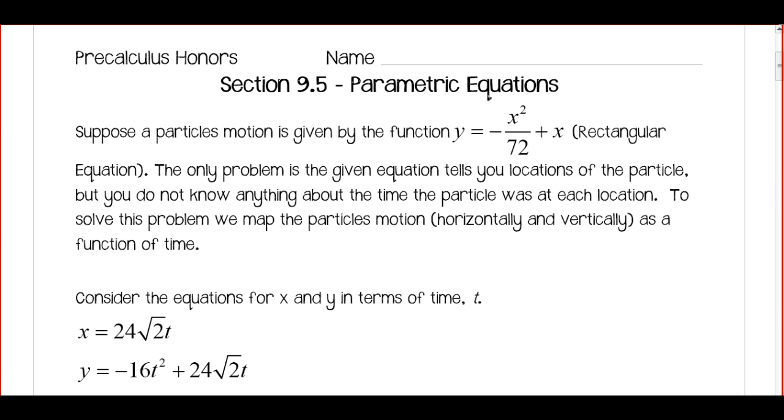So first let's look at particle motion given by this equation here. We've got y equals the opposite of x squared over 72 plus x, and this is a rectangular equation. This is what we normally are working with. And it's a good equation except the only problem is it tells you the location of the particle.